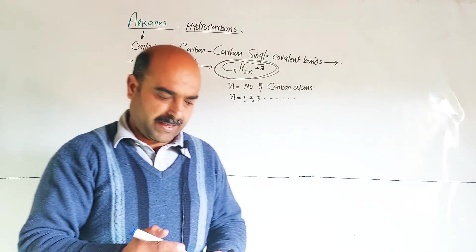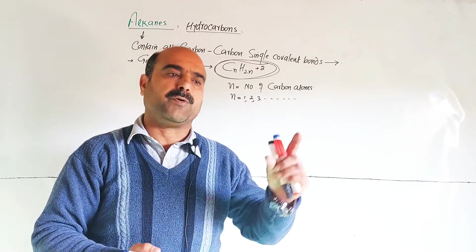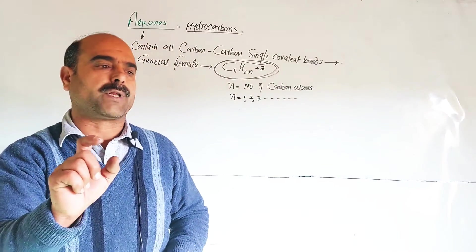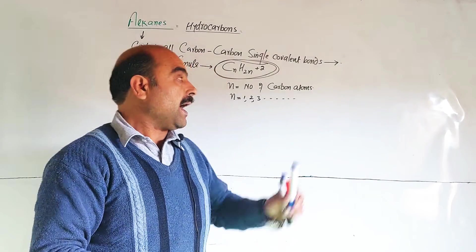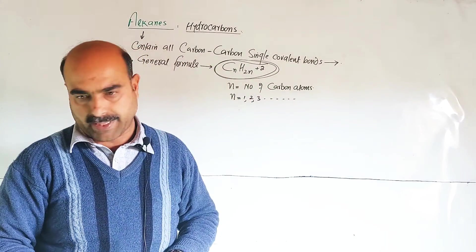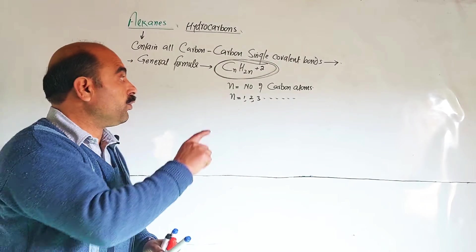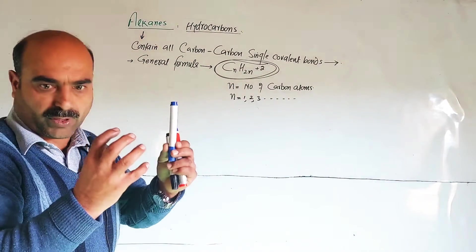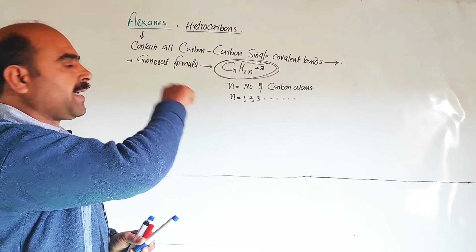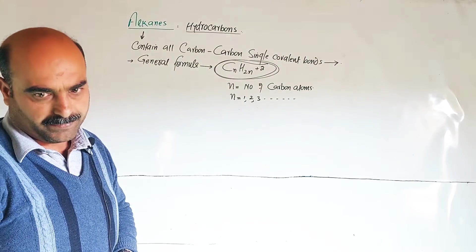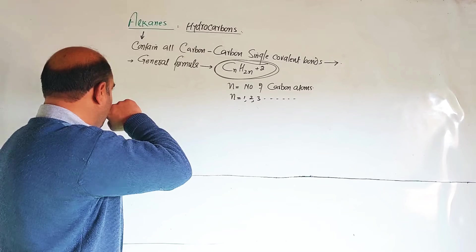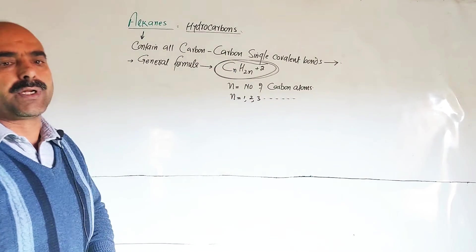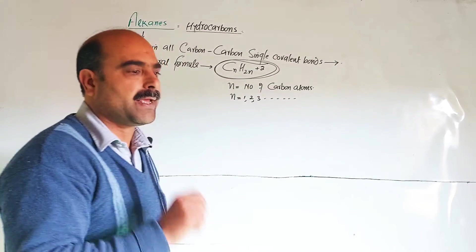If the number of carbon atoms is given, this formula is used to find out the total number of hydrogens. Alkanes must be connected by single covalent bonds. This formula CₙH₂ₙ₊₂ is used to find the total number of hydrogens if the number of carbon atoms are given.